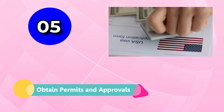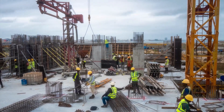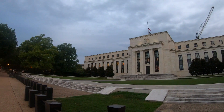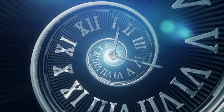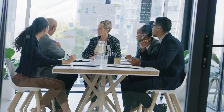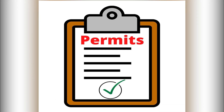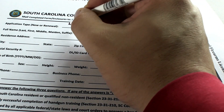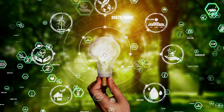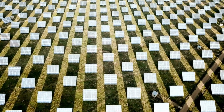Step 5: Obtain Permits and Approvals. Before beginning construction, you will need to obtain the necessary permits and approvals from local, state, and federal agencies. This process can be complex and time-consuming, so it is important to plan ahead and allow for ample time to secure all necessary approvals. In addition to securing permits for construction and operation, you will also need to obtain any necessary environmental permits, such as air and water quality permits. This process may involve conducting environmental assessments and mitigation measures to minimize the impact of your solar farm on the local environment.